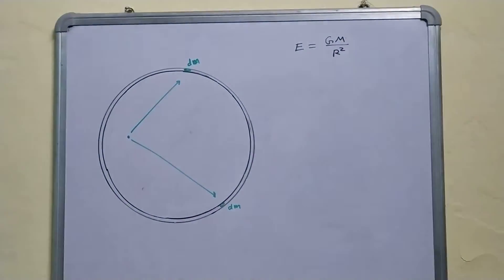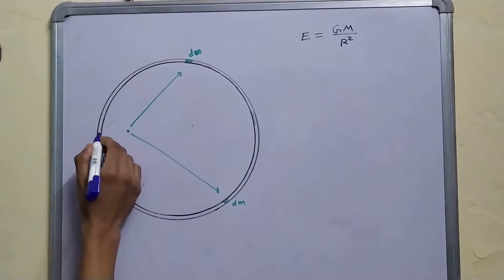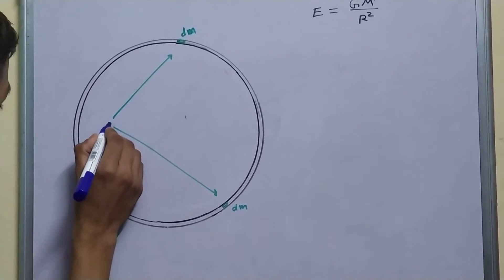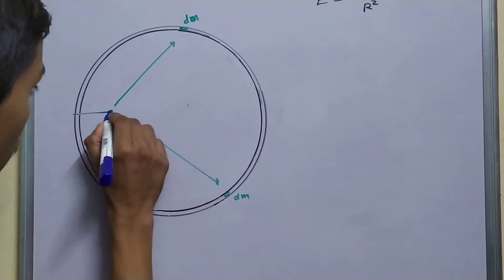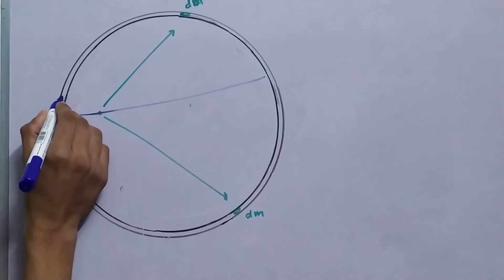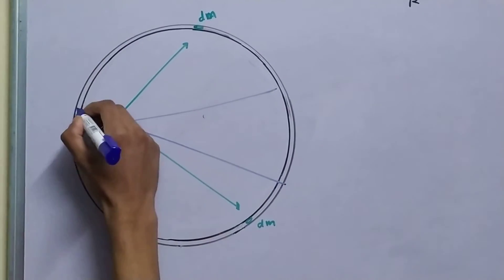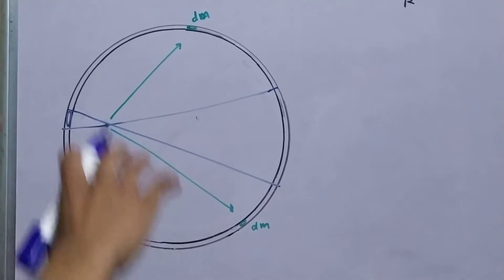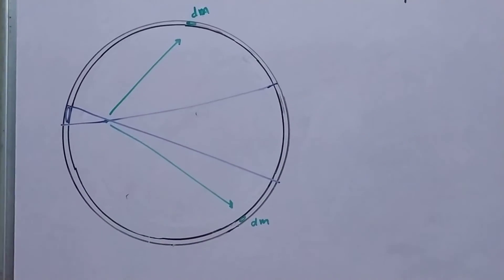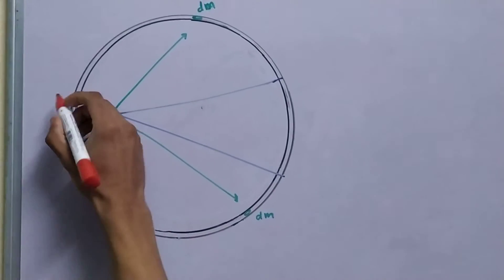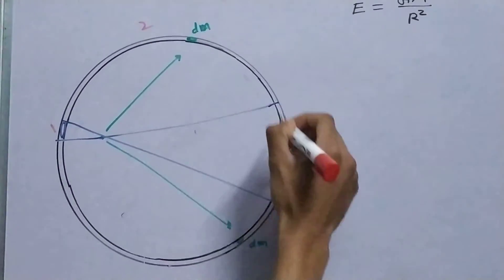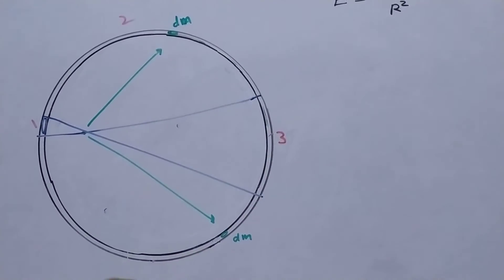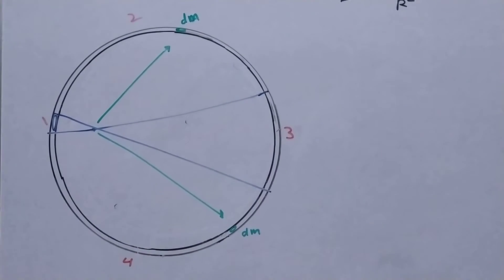First, we will start off by doing a construction, something like this. We have divided our shell into four regions. This is our first region, this is second, we call this three, let me call this region four.